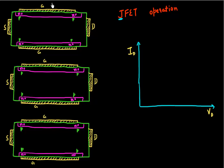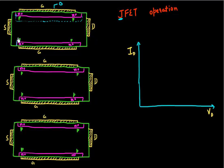If I'm applying zero voltage on the gate, this junction will have some depletion width. Since it's an N-plus P junction, most of the depletion will happen in the P side, which has lower doping. If I draw the depletion region, this region is already depleted. This is my space charge region or my depletion region, at gate voltage equal to zero.